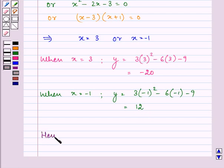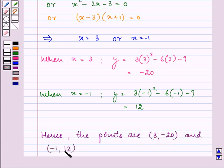Hence, the points at which the tangent to the curve y equals x cube minus 3x square minus 9x plus 7 is parallel to the x-axis are (3, -20) and (-1, 12). So this is the required answer to the given question.